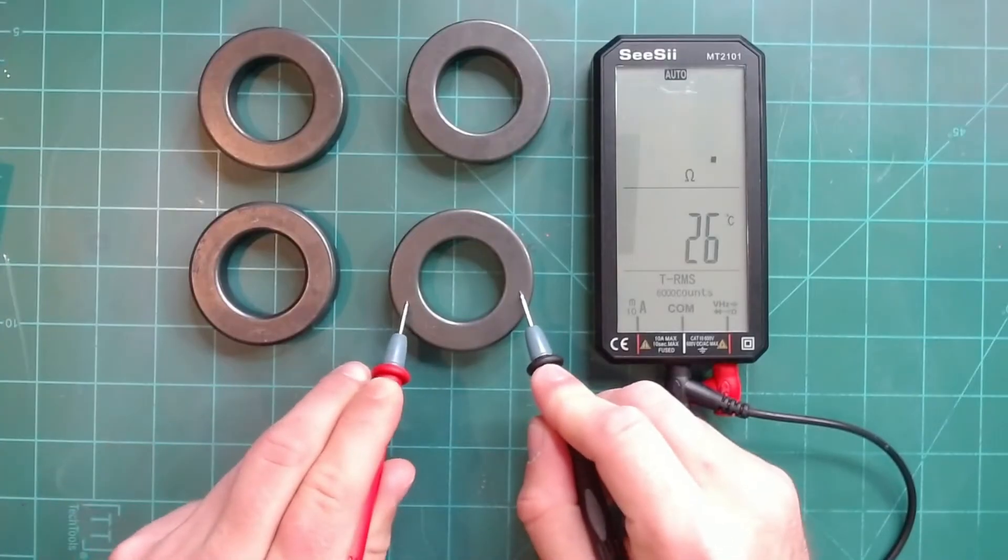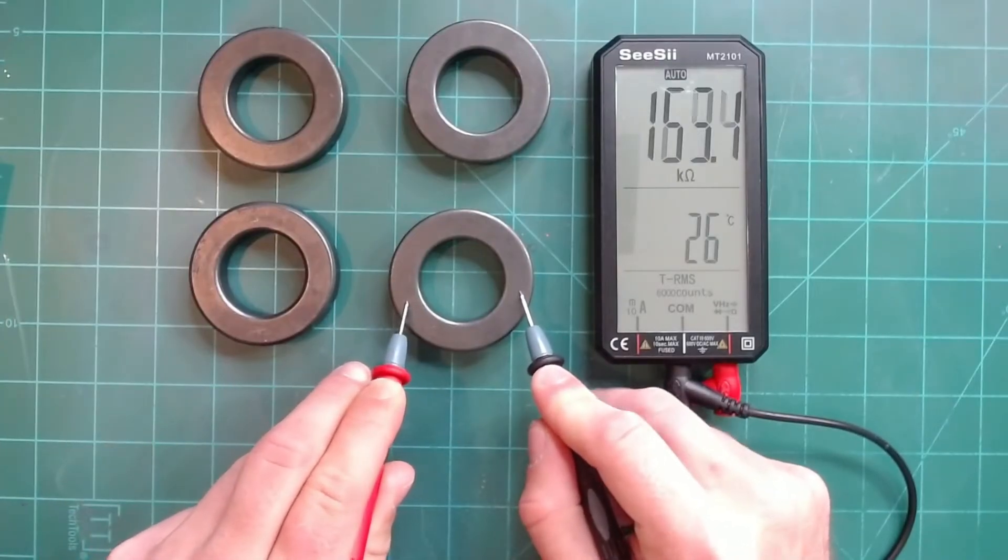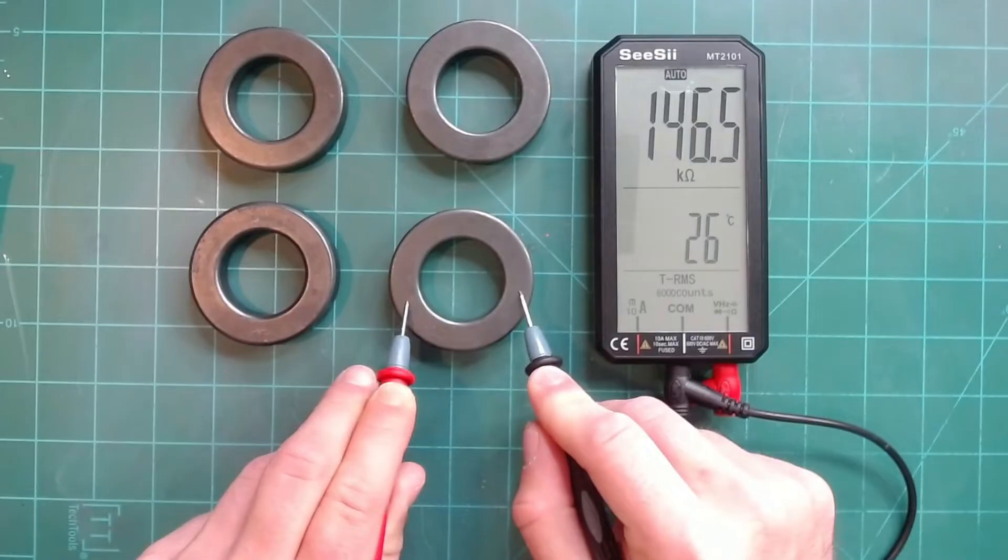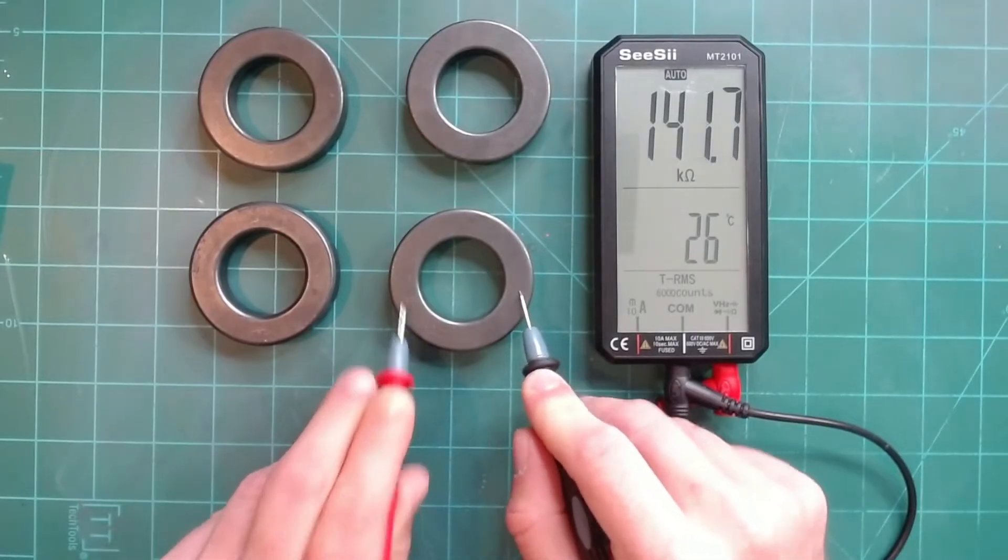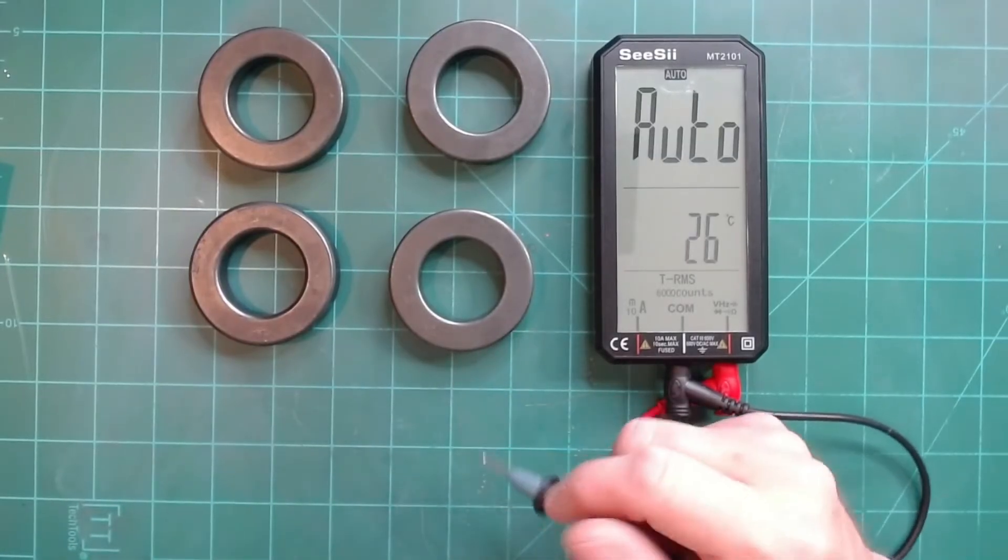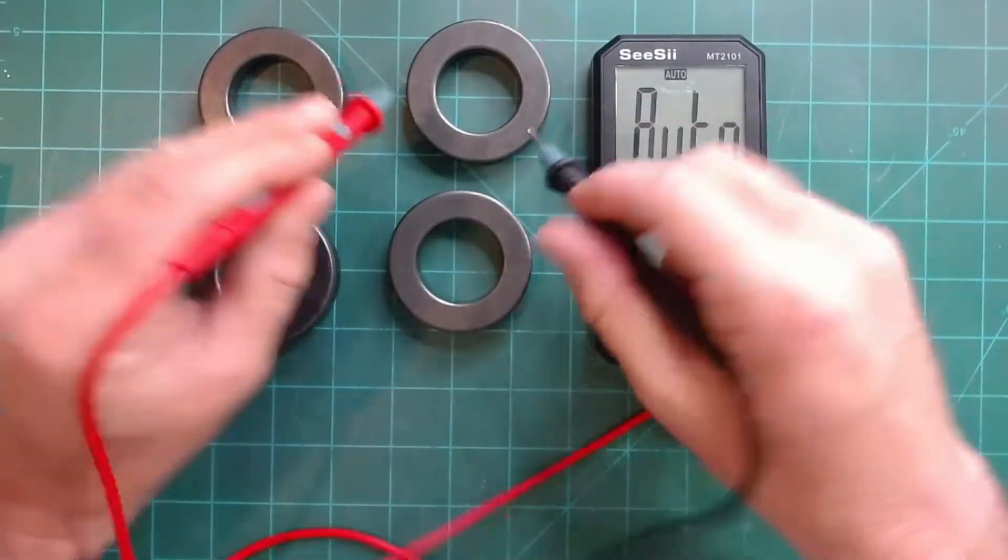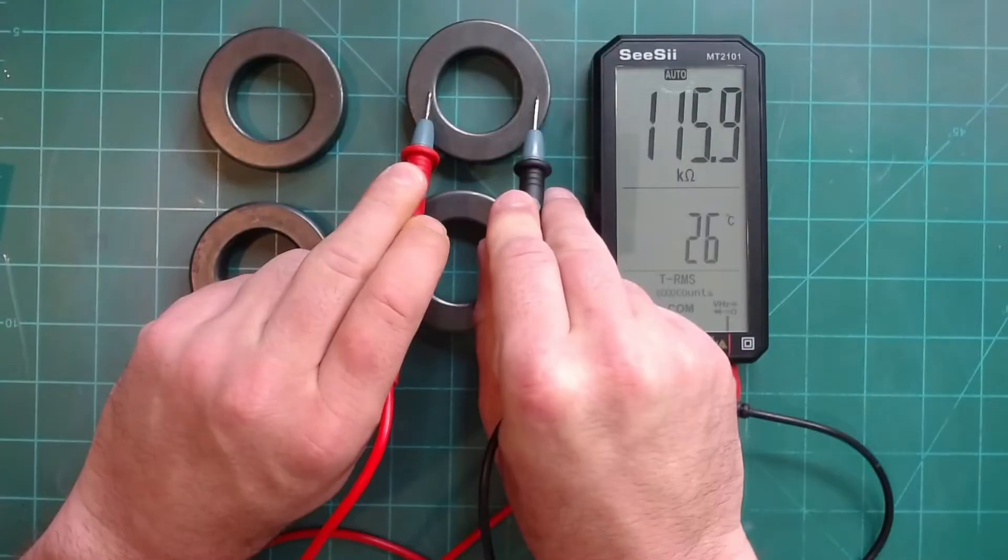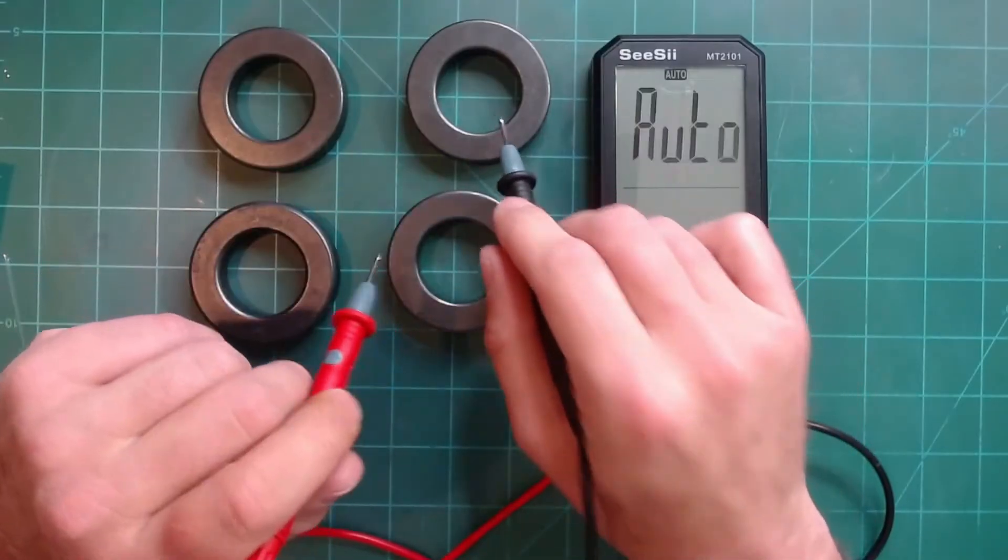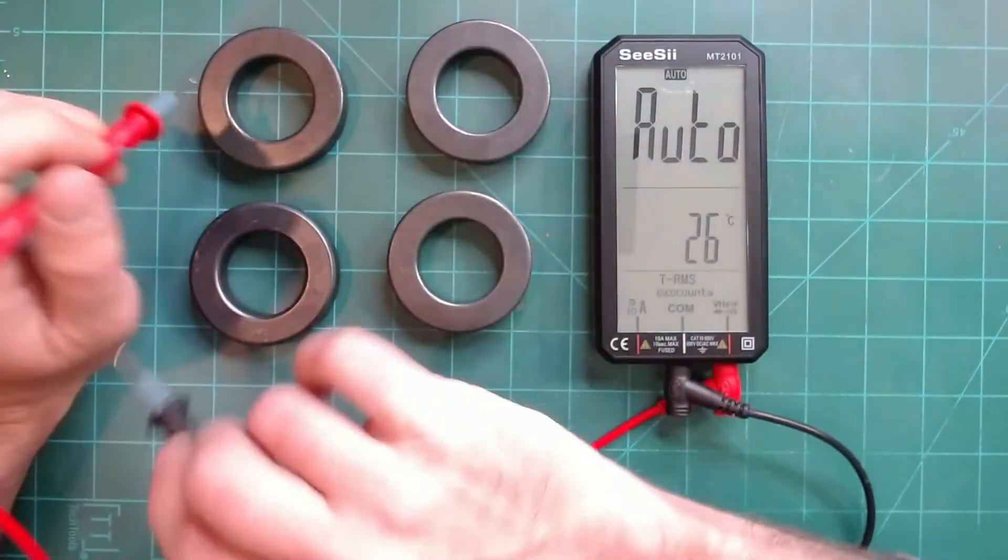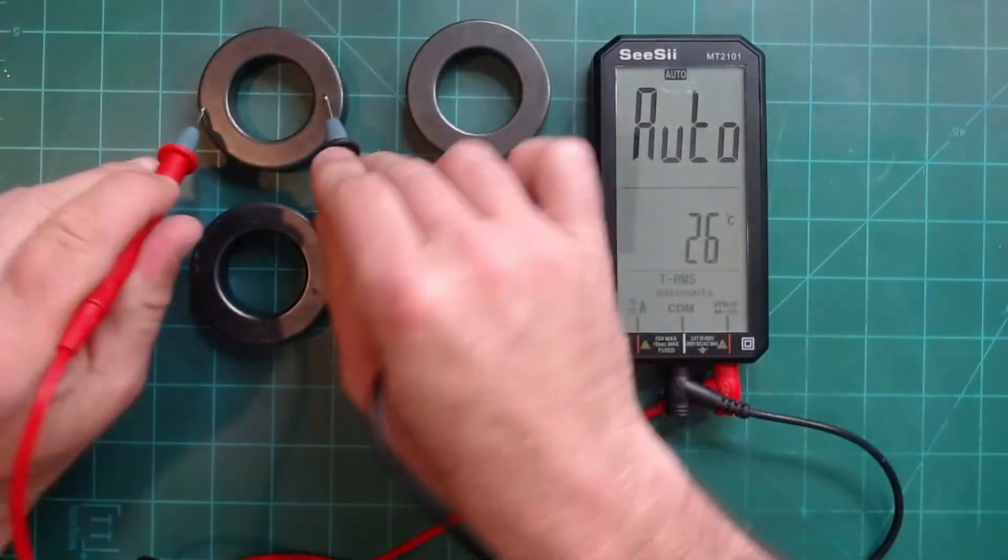This toroid here has 155k ohms. What that's telling me is that this is probably used for RFI suppression. It's probably, again, magnesium zinc core. 113k ohms, again, probably magnesium zinc core. And this is why it's important to buy your toroids from a known source. You just go on eBay. Yeah, you're probably good if you have a reputable seller on eBay, but,